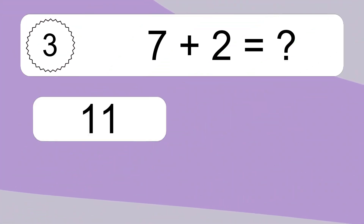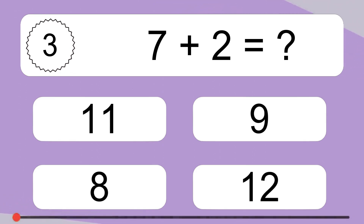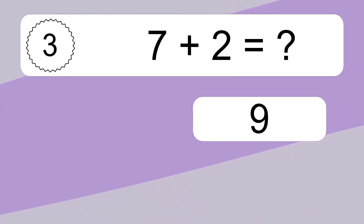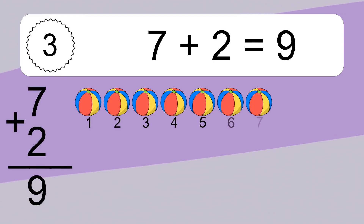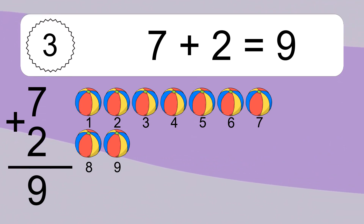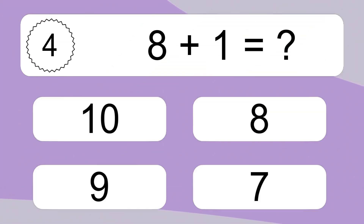7 plus 2 equals what? 7 plus 2 equals 9. Let's count it. 1, 2, 3, 4, 5, 6, 7, 8, 9.